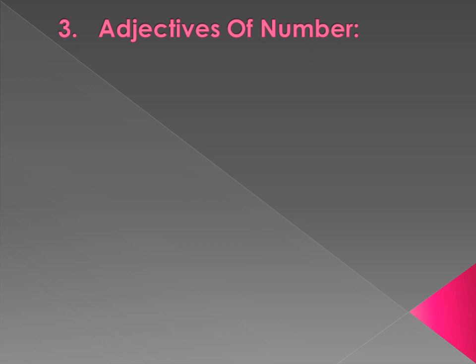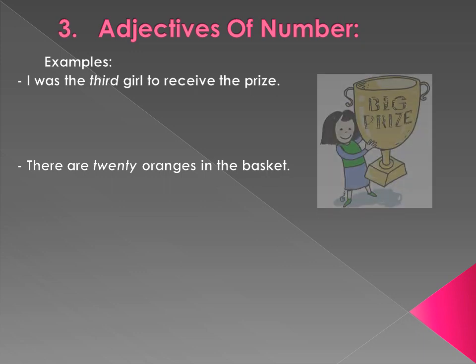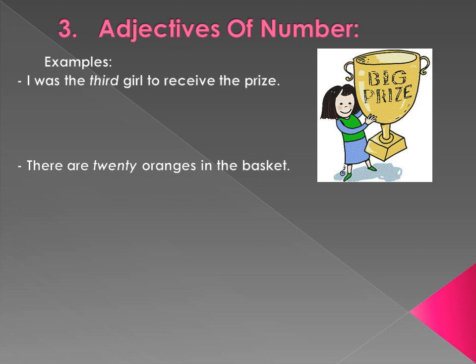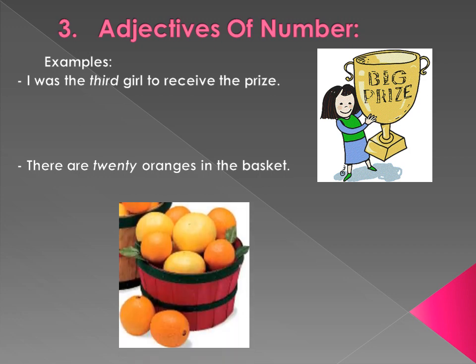Third kind of adjective is adjective of number. These are words that tell us the number of a noun or pronoun. For example: 'I was the third girl to receive a prize. There are twenty oranges in the basket.' The adjectives here are 'third' and 'twenty'. The first sentence tells the girl's position — third — and the second tells how many oranges are in the basket — twenty.